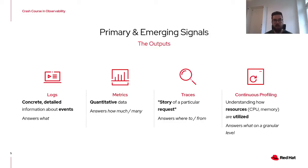Metrics represent quantitative data. They can answer 'how much' or 'how many' questions for us, such as how many 500 HTTP status codes did the server respond with in the last 30 seconds. Traces tell us about the journey of a particular request or transaction in our system. They are useful in answering questions related to how information travels and how it is handed over between various components.